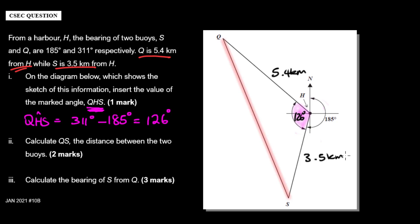Whenever we're thinking bearings, we're either going to use angle properties or one of the trig rules. I can't really use any angle properties because I need a side, so I'm going to have to use one of the rules. Is it going to be the cosine rule or the sine rule? This side is 5.4, this side is 3.5, and the angle in front of the unknown side is 126 degrees. I know two sides and the angle between them, which means to find the opposite side I should use the cosine rule.